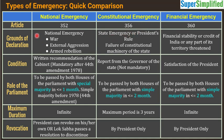What are the grounds of declaration for national emergency? National emergency has three conditions: one is war, two is external aggression, and three is armed rebellion. War and external aggression mean external threat, while armed rebellion means internal aggression.